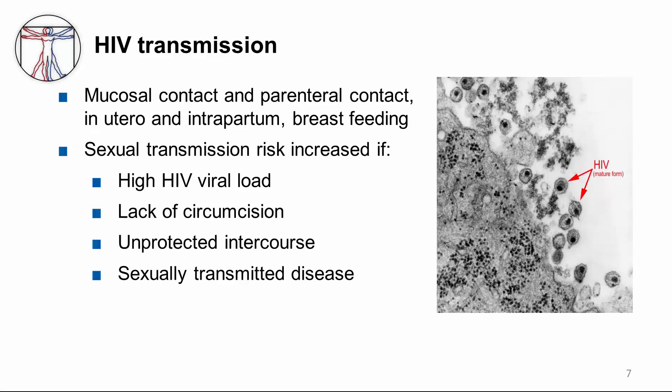Before we review some of the prevention methods for HIV, let's recap how HIV is transmitted. We know that HIV infection can occur with mucosal and parenteral contacts, such as in the case of injection drug users, as well as in utero and intrapartum, for example, in breastfeeding. Research has shown that sexual transmission of HIV is enhanced if there's a high HIV viral load, in uncircumcised men, in vaginal or anal intercourse, in unprotected intercourse, and if there's a concomitant sexually transmitted infection, which could either be ulcerative like syphilis or non-ulcerative like chlamydia.